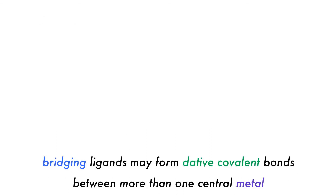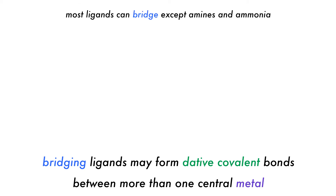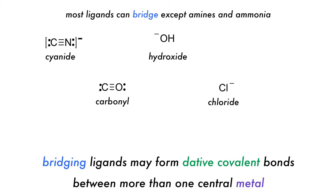Bridging ligands connect two or more atoms, usually metals. Both atomic and polyatomic bridging ligands exist. Most ligands are known to bridge except amines and ammonia. Some common examples are cyanide, carbonyl, chloride, hydroxide, and amido, among others.